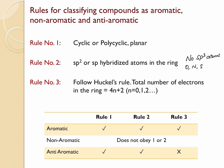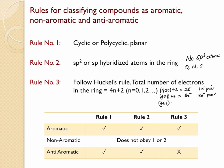Hückel's rule states that you should only have odd pairs of electrons participating in delocalization. Substituting n=0: 4(0)+2 = 2 electrons, which is one electron pair. Substituting n=1: 4(1)+2 = 6 electrons, which is three electron pairs. Substituting n=2: 4(2)+2 = 10 electrons, which is five electron pairs. So when a compound follows Hückel's rule, it needs to have an odd number of electron pairs.